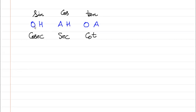What does this mean? This basically represents opposite upon hypotenuse. So sine theta is opposite upon hypotenuse. While cos theta, or cosine theta, is adjacent upon hypotenuse. Then tan theta, or tangent theta, is opposite upon adjacent. That's it.